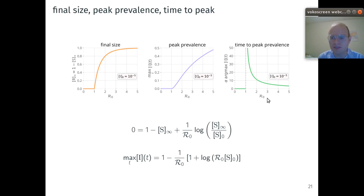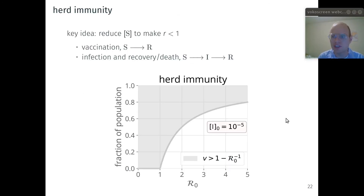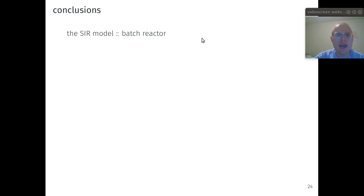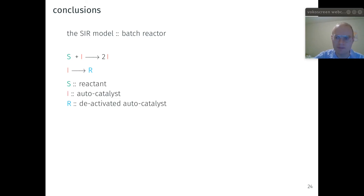In further analysis of the SIR model, we can derive the final size of the epidemic, the peak prevalence of infectious folks, and the time to reach peak prevalence — all in terms of the basic reproduction number. The SIR model also captures a notion of herd immunity, where the concentration of susceptible folks is reduced such that the replacement number falls below one. In my paper, I outline several extensions to the SIR model which also have analogies with phenomena in the chemical sciences. In conclusion, the SIR model is much like a batch reactor undergoing two reactions: an autocatalytic reaction between reactant S and autocatalyst I, and a decay of autocatalyst I to a deactivated form R. Susceptible folks are analogous to the reactant, infectious folks to the autocatalyst, and removed folks to a deactivated form of the autocatalyst. See PeerJ Physical Chemistry for the paper.